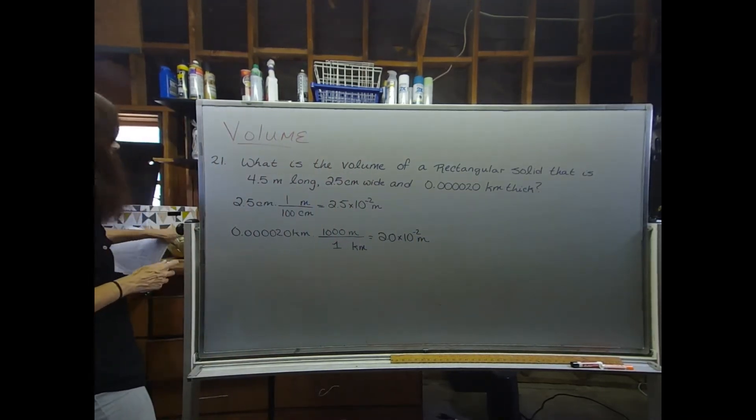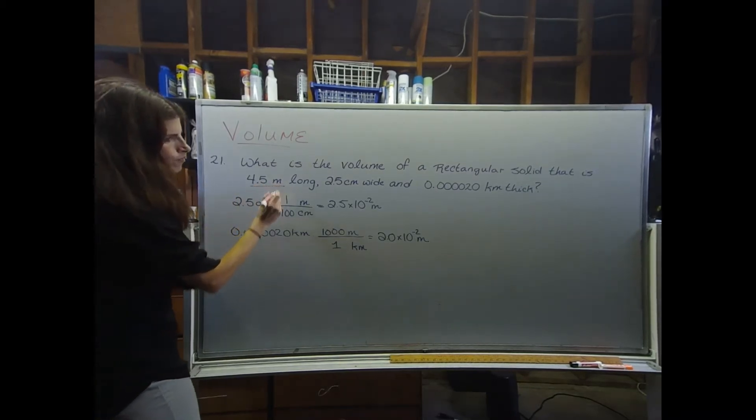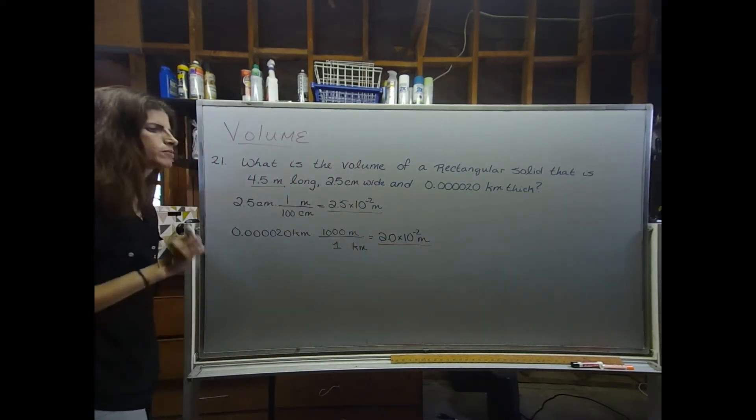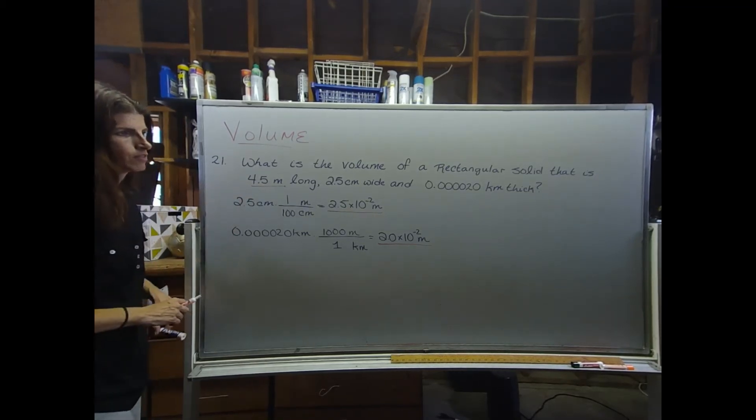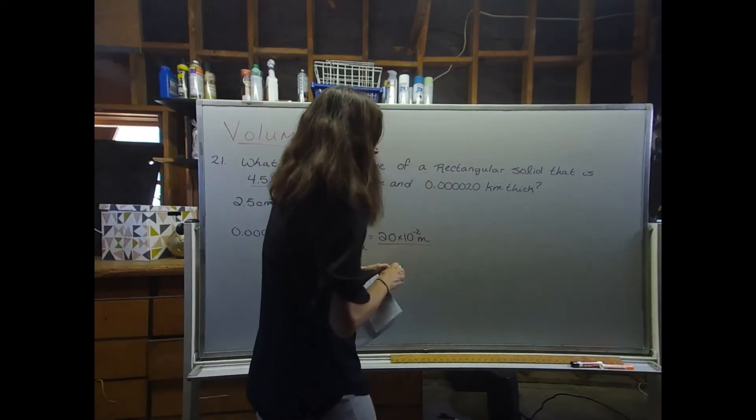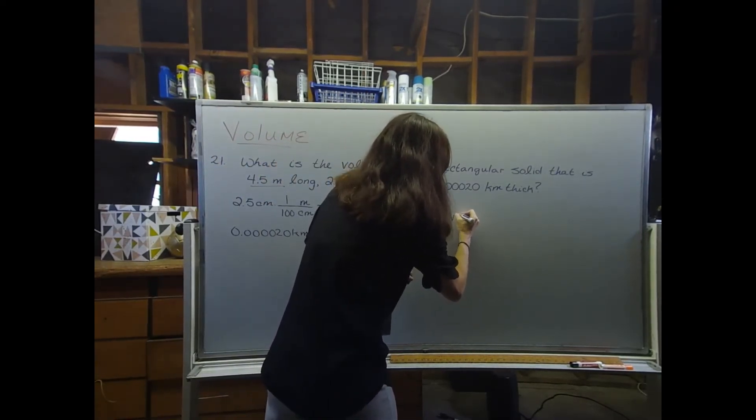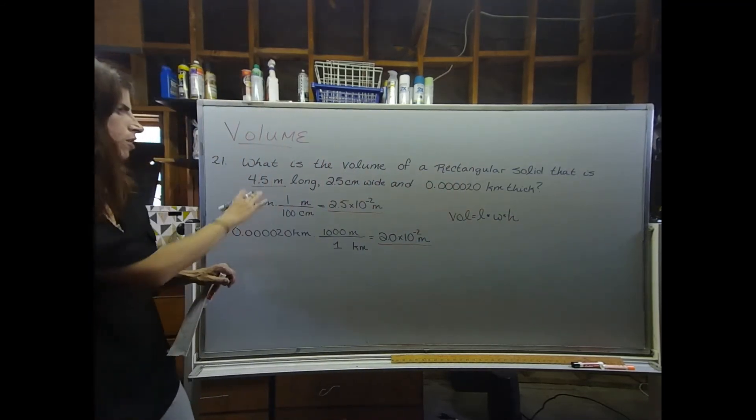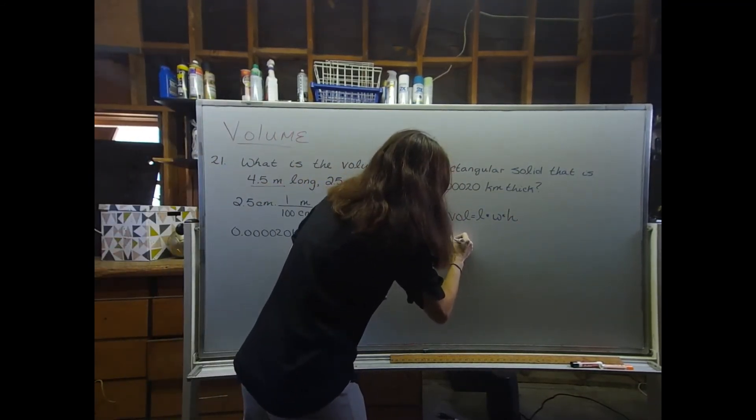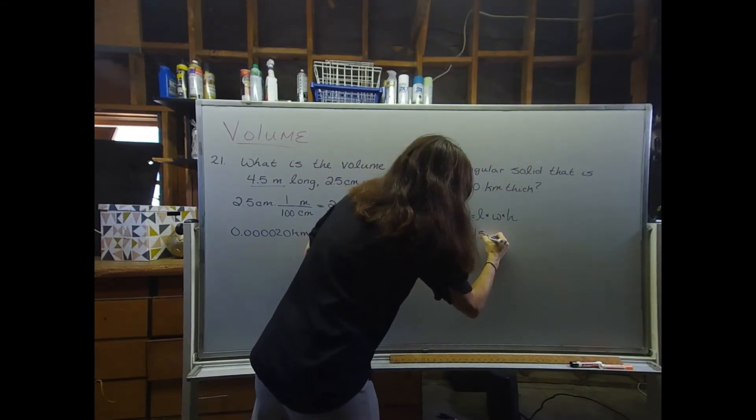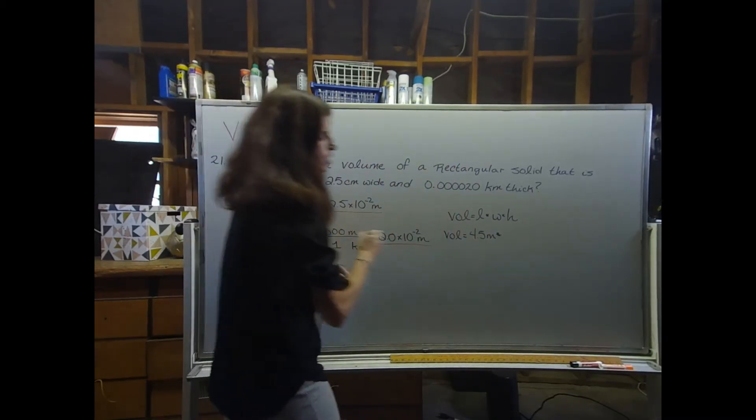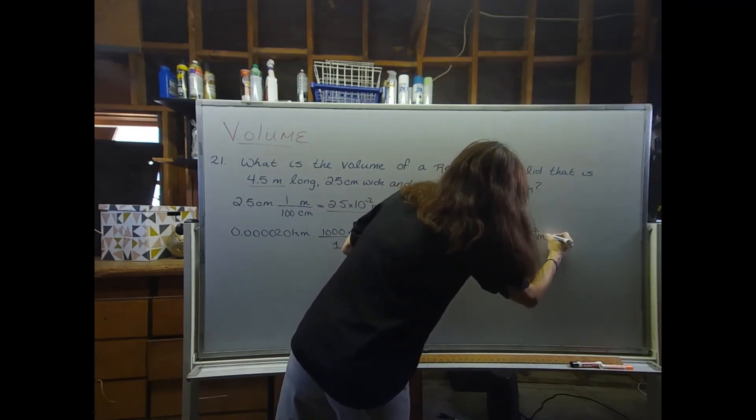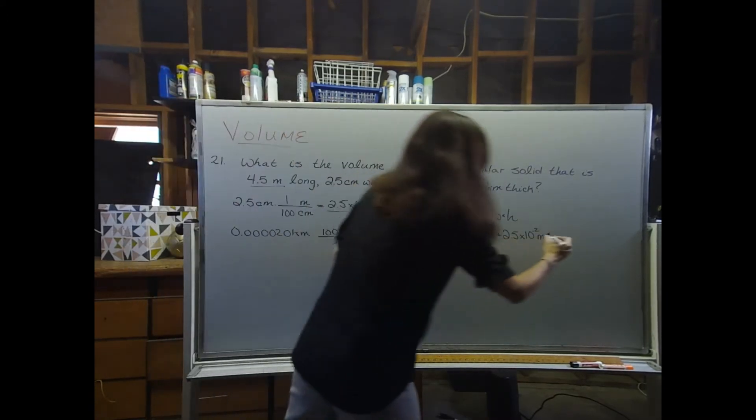Now that I've done that, I can take the three values, the 4.5, the 2.5 times 10 to the negative second meters, and the 2.0 times 10 to the negative second meters, and multiply them to calculate the volume of this rectangular cell. So volume equals length times width times height, so I'm going to plug in 4.5 meters times 2.5 times 10 to the negative 2 meters times 2.0 times 10 to the negative 2 meters.